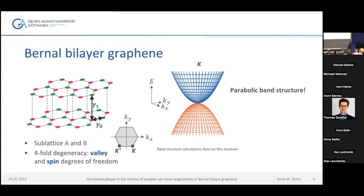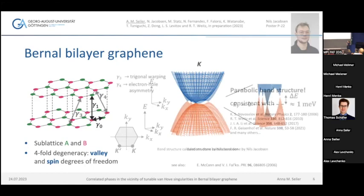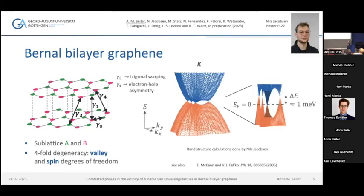For transport, we are interested in what's happening near the K points. If I had shown you the band structure a few years ago, I would have calculated it using next-nearest-neighbor hopping parameters, giving a parabolic band structure. However, when measuring very clean samples, we found the experimental data does not fit this parabolic band structure. Looking back into early theory of bilayer graphene, including more hopping parameters gives a band structure that is different from the parabolic one. Even at zero electric displacement field, there are four so-called mini Dirac cones emerging at very low energies.